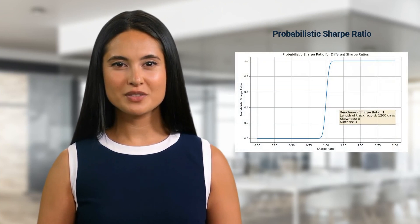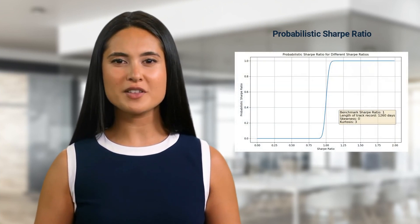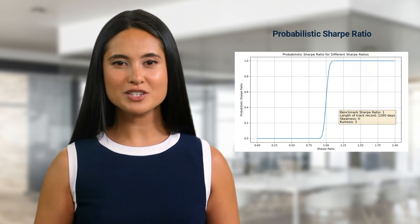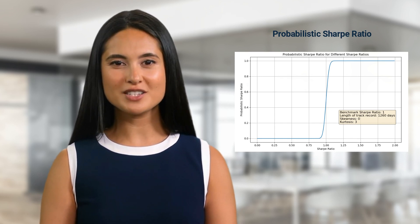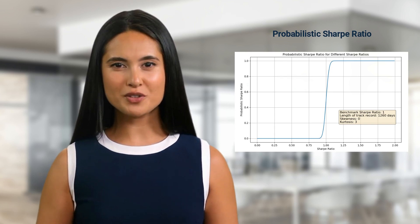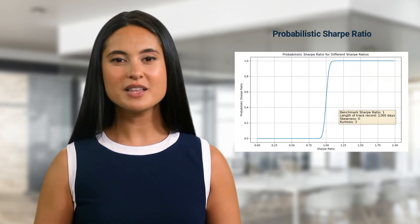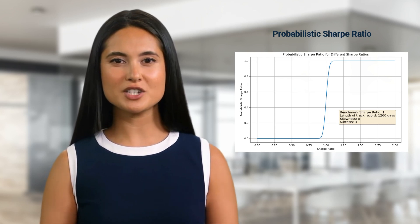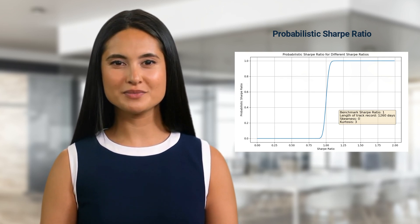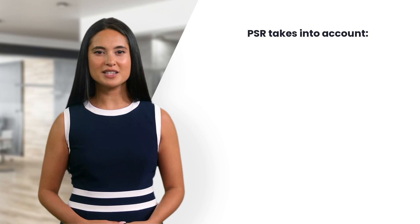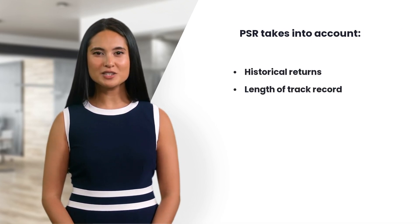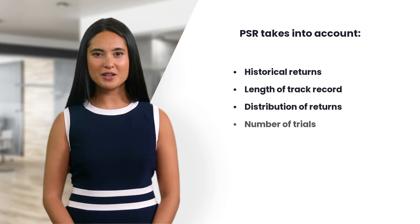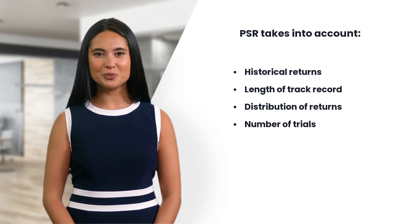This is where the Probabilistic Sharpe Ratio comes in. The PSR is a statistic that measures the probability that the true Sharpe Ratio of a strategy is greater than a given threshold. For example, if we set the threshold to one, the PSR tells us how likely it is that the strategy has a Sharpe Ratio above one. The PSR takes into account historical returns, length of track record, distribution of returns, and the number of trials, addressing some inherent biases and errors.